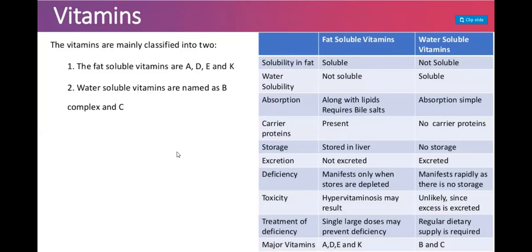First we will talk about the basic differences between fat-soluble vitamins and water-soluble vitamins. Regarding solubility, fat-soluble vitamins are soluble in fat but not in water, whereas water-soluble vitamins are soluble in water but not in fat. For absorption, fat-soluble vitamins require bile salts like lipids, while water-soluble vitamins absorb simply in the presence of water. Carrier proteins are present for fat-soluble vitamins but not for water-soluble vitamins.